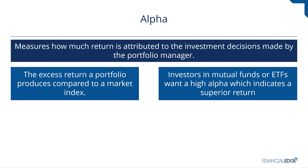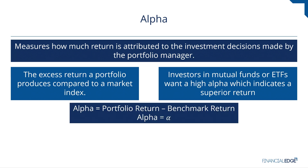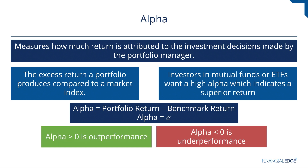In its simplest form, alpha is simply equal to the portfolio's absolute return minus the benchmark — that is the simplest calculation for alpha. If alpha is greater than zero, it means the portfolio manager outperformed the benchmark; if it's less than zero, it indicates an underperformance.